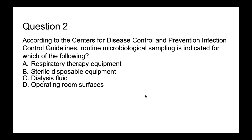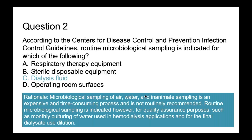Question two: According to CDC Infection Control Guidelines, routine microbiological sampling is indicated for which of the following? A, respiratory therapy equipment; B, sterile disposable equipment; C, dialysis fluid; D, operating room surfaces. The correct answer is C — dialysis fluid. We don't want to be the sampling fairies. Microbiological sampling of air, water, and inanimate surfaces is expensive and not routinely recommended. However, routine sampling is indicated for quality assurance purposes, such as monthly culturing of water used in hemodialysis and final dialysate.